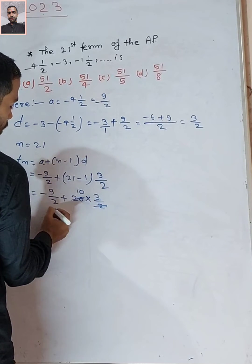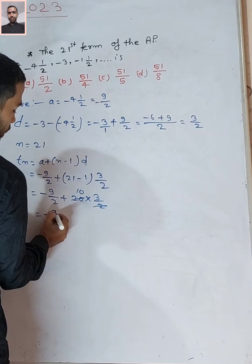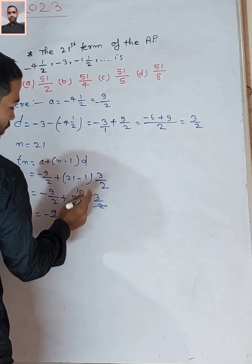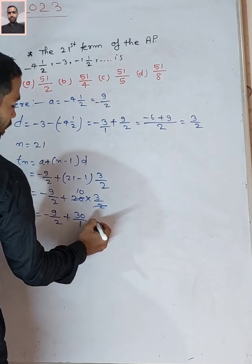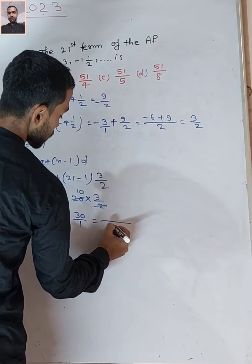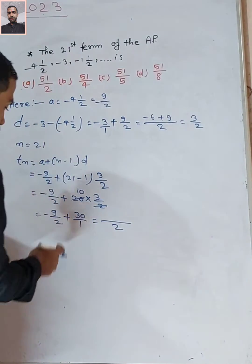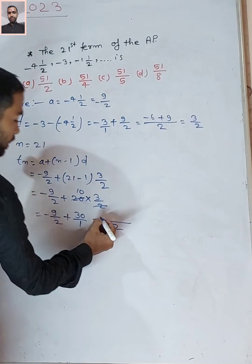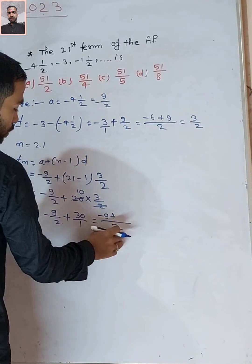20 multiplied by 3/2 equals 30. So, -9/2 plus 30. The LCM of 2 and 1 is 2, so we convert: -9 plus 60.